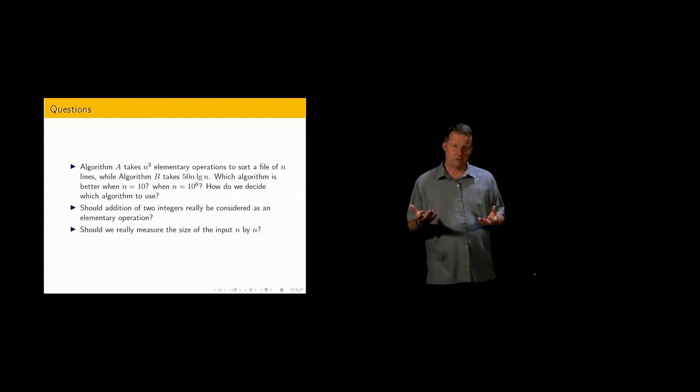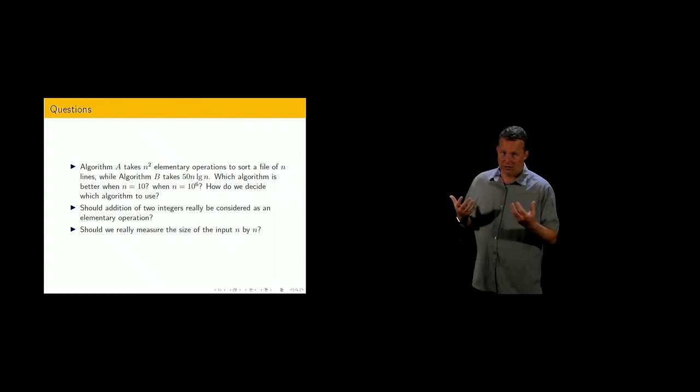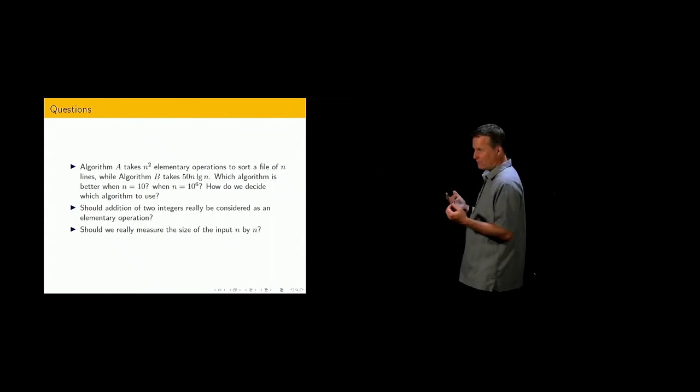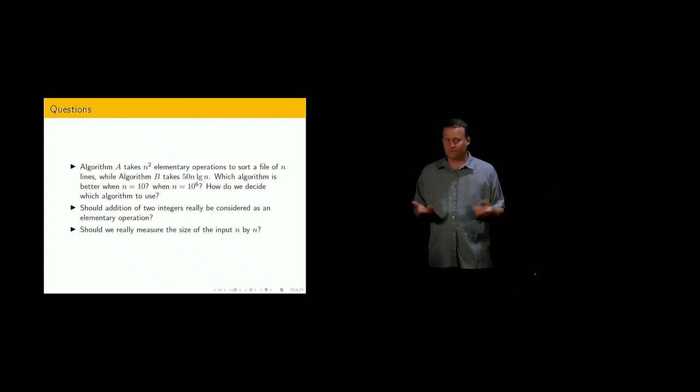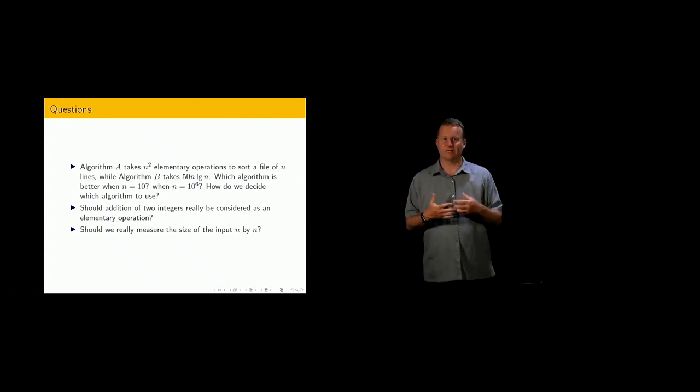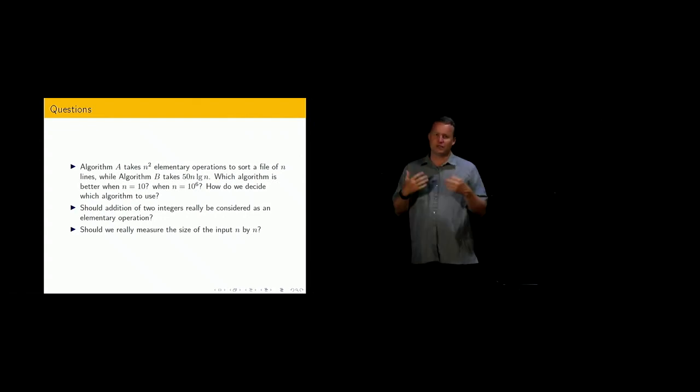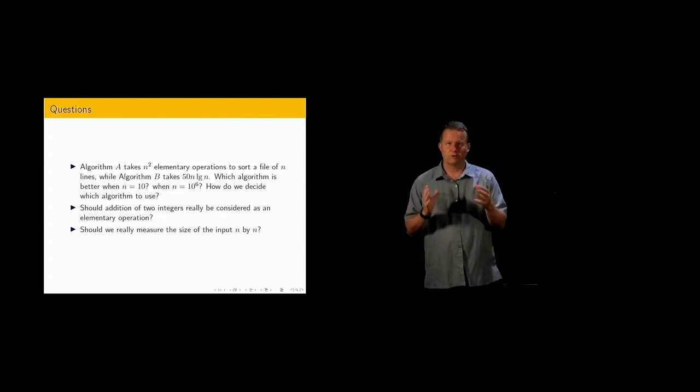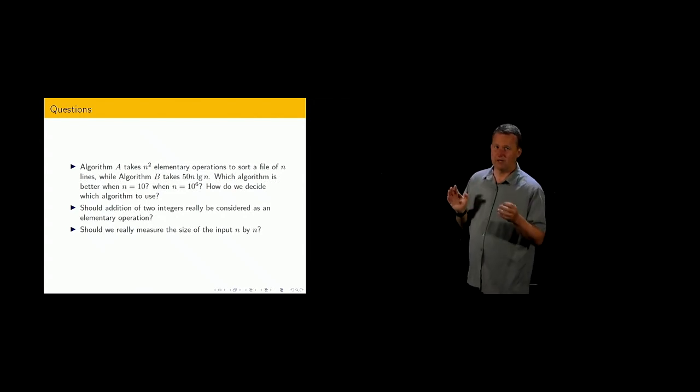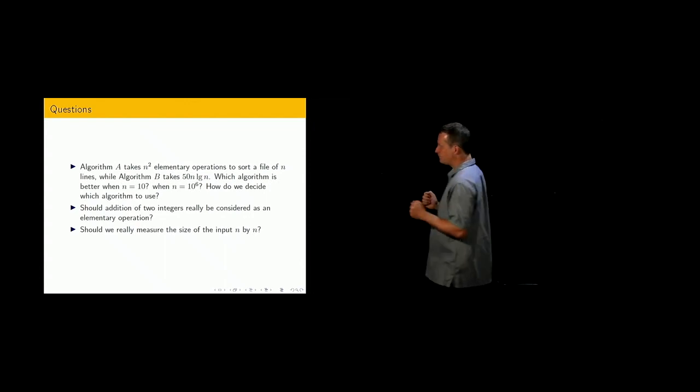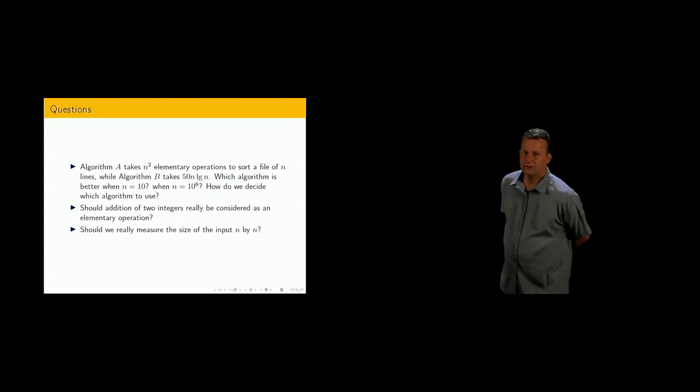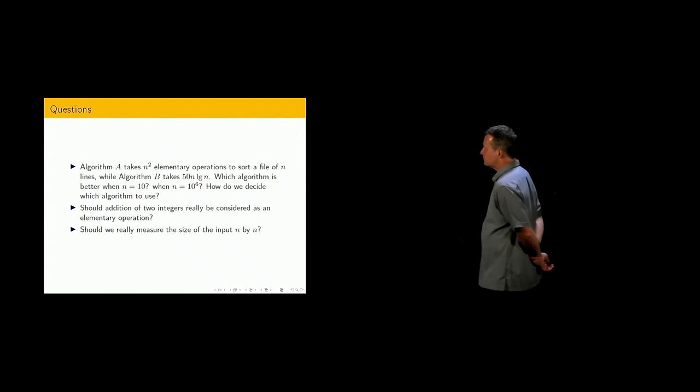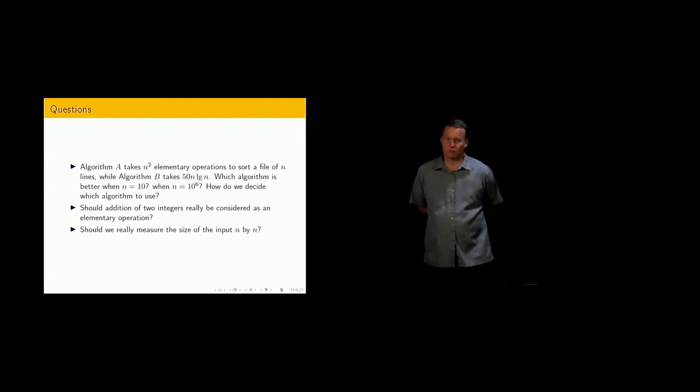And they have different running times, as you can see there. One of them scales like n squared, the total amount of elementary operations for input size n. And the other is more like a constant times n log n. So you need to remember that this is the binary logarithm, log to the base 2, if you remember that from the mathematics supplementary lecture. So first of all, which algorithm would you use for a specific value of n? And how do you solve that?